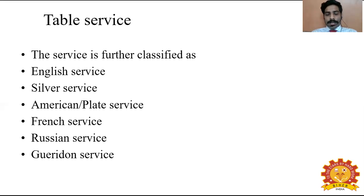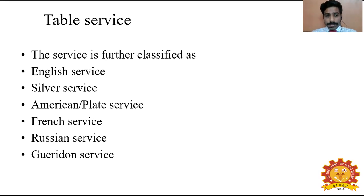Silver service means everything is in silver — from the serving equipment to the guest's cutlery and crockery. Gueridon service, also known as trolley service, allows the guest to see their food being prepared; 50% is already cooked in the kitchen and the remaining 50% is cooked in front of the guest. In American plate service, the food is pre-plated for the guest and served directly from the kitchen on a hot plate. The key rule: waiter serving the guest should always be done from the left side of the guest; any pre-plated food is served from the right side.